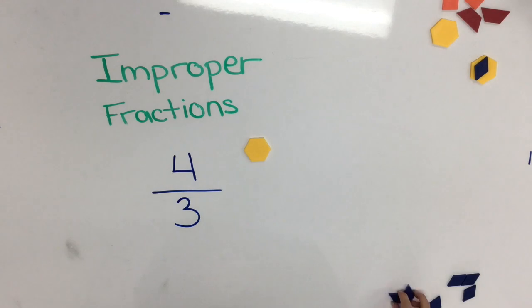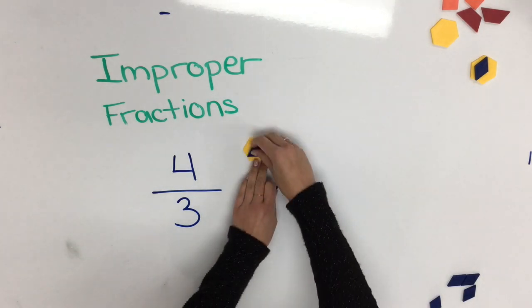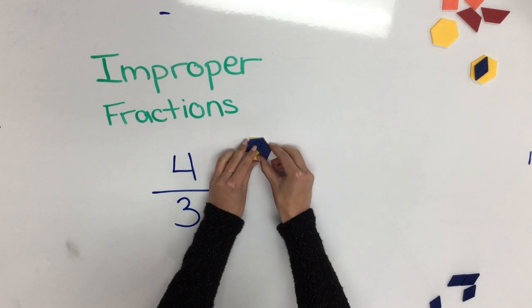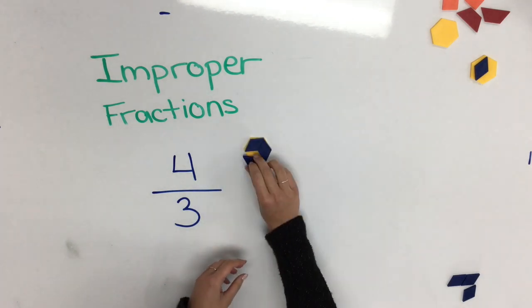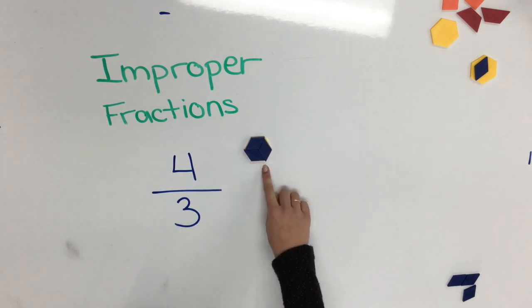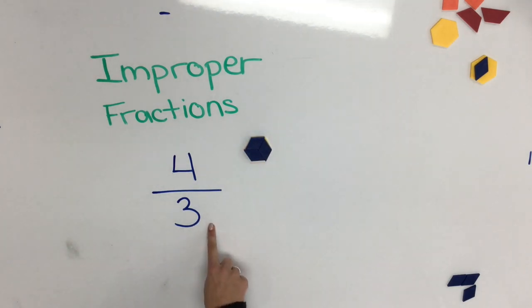If my whole is a hexagon I can split it into one, two, three equal pieces. So I know my whole has three pieces in it but my fraction is 4 thirds. So how can I build that?